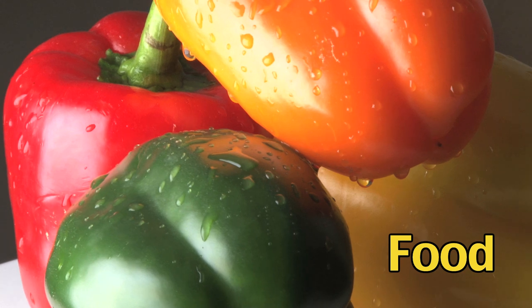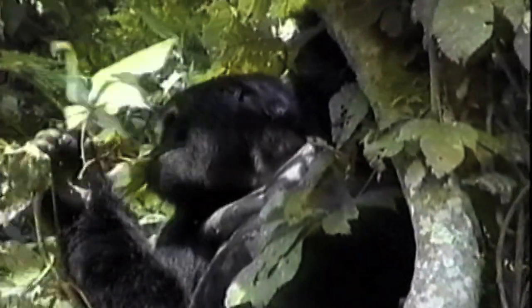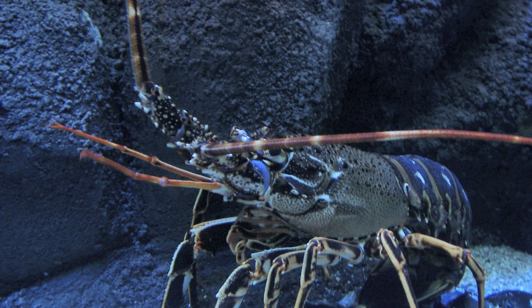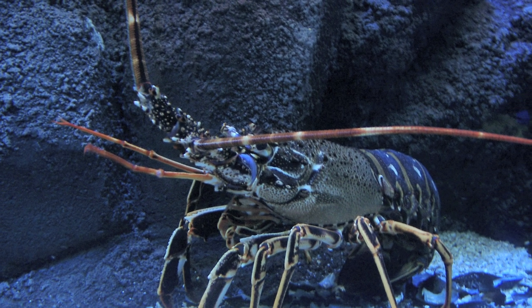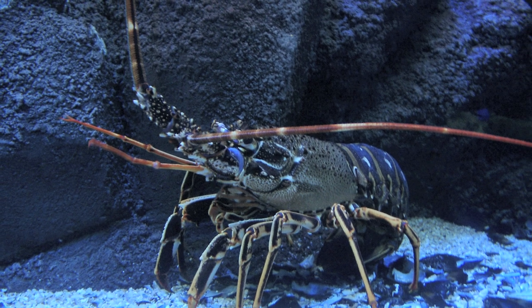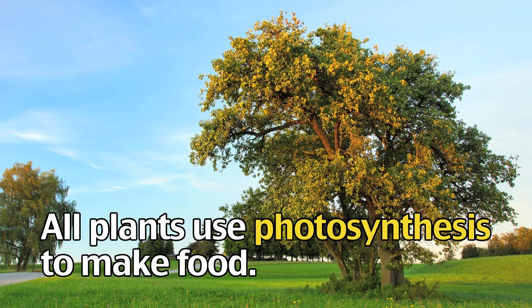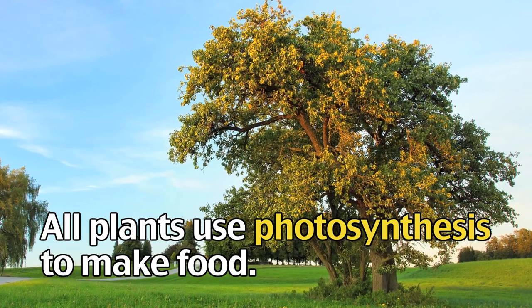The monkey typically eats fruits, leaves, honey, coconuts, and insects. The lobster is a little more carnivorous and eats crabs, sea urchins, plankton, and small fish.